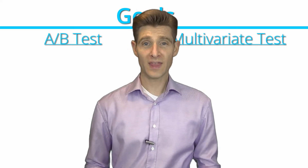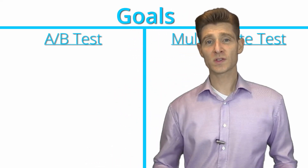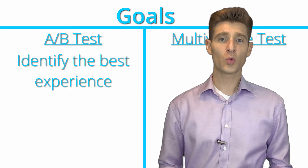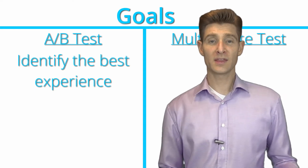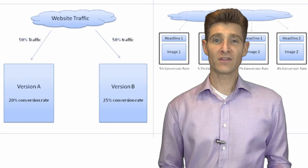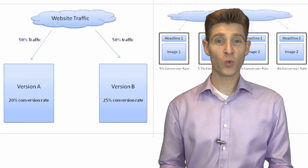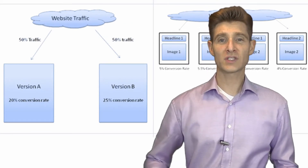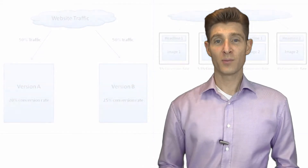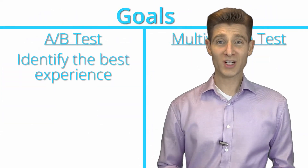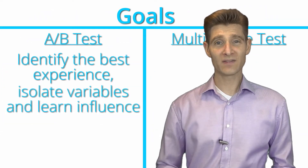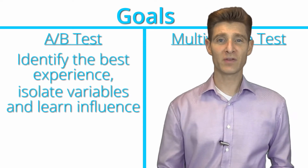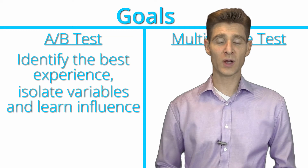Let's talk about the goals of the A/B test and the goals of the multivariate test. The goal of the A/B test is to learn which is the best experience. In the example from VWO, if version 1 wins, you know it was better than the control — it's seeing which experience wins. It's also important to call out that you can isolate variables with an A/B test, so you can learn the influence of a single variable as well.